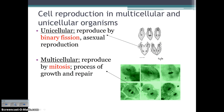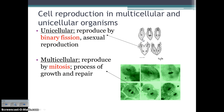Let's start by talking about the difference in the way cells divide for unicellular organisms and multicellular organisms. We're going to focus on multicellular organisms in class. But unicellular organisms — so bacteria — reproduce through a process of binary fission. This is asexual reproduction, simply the cell splitting in half.